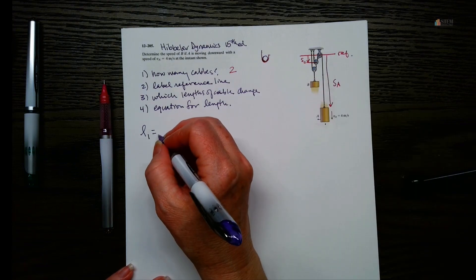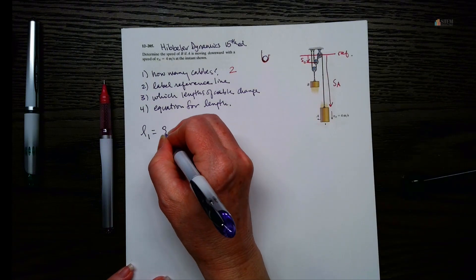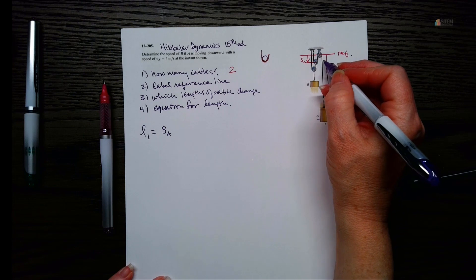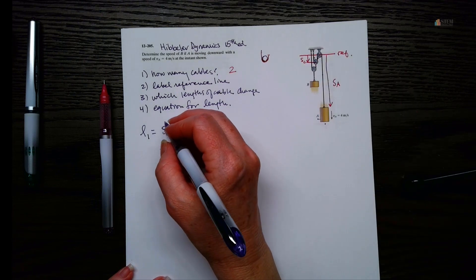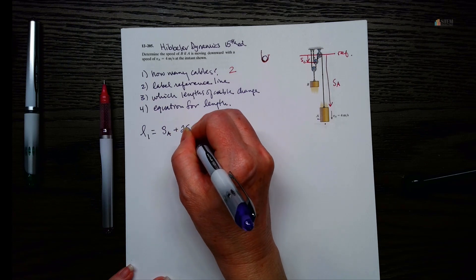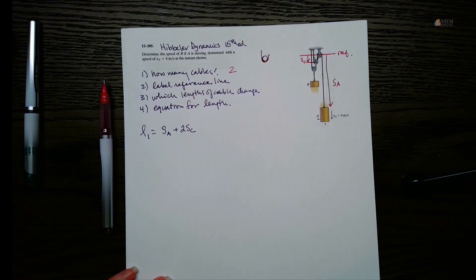So what we're going to do then, our length here for cable one will be SA, right here. And then these lengths, we're going to assume they are the same, so we'll put SA plus 2SC. Okay, so now we've got our first equation.